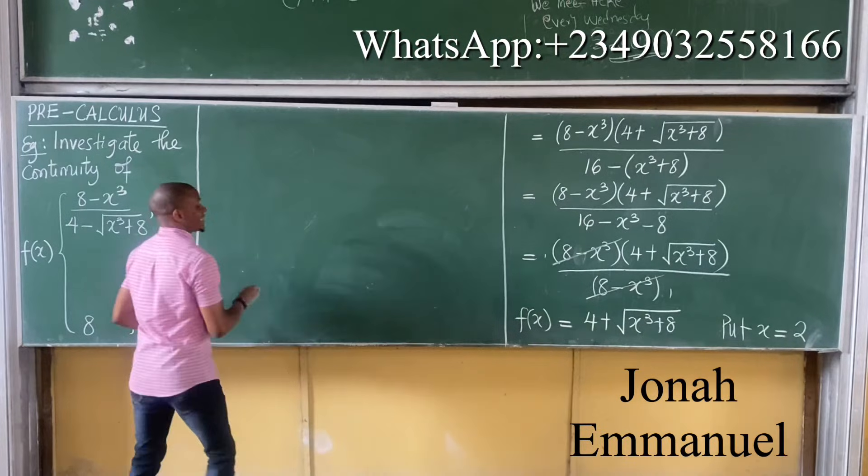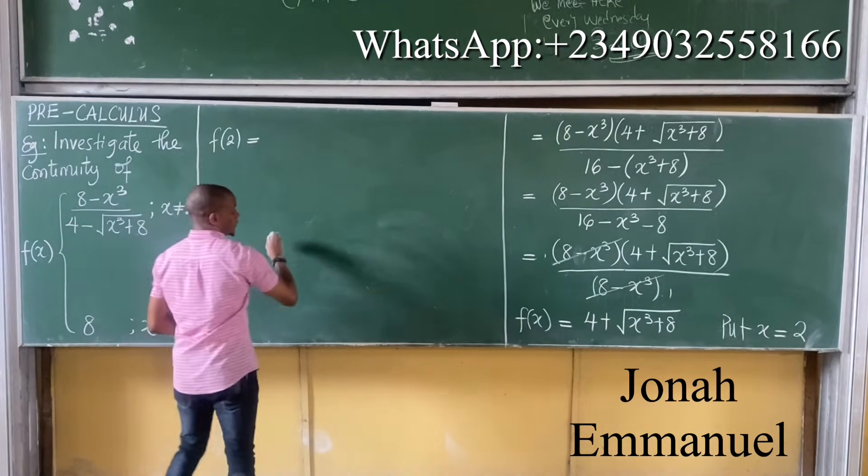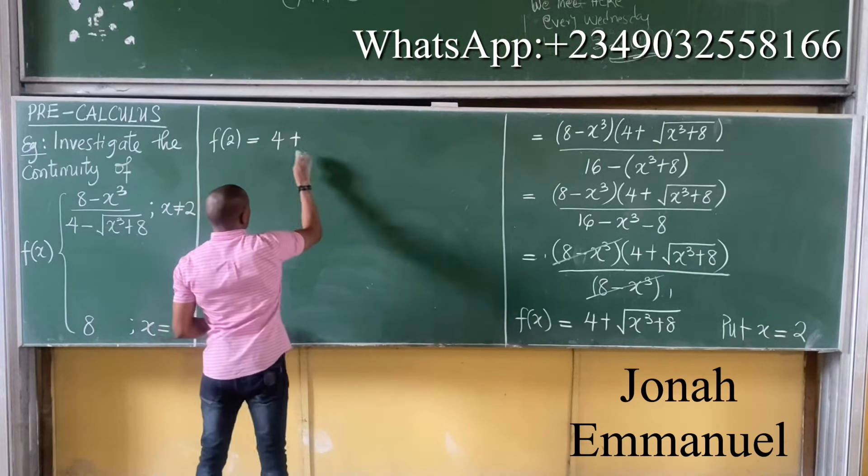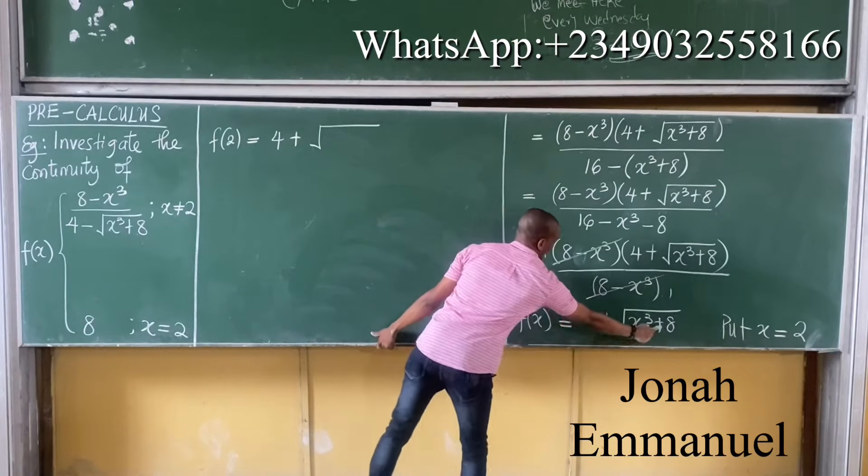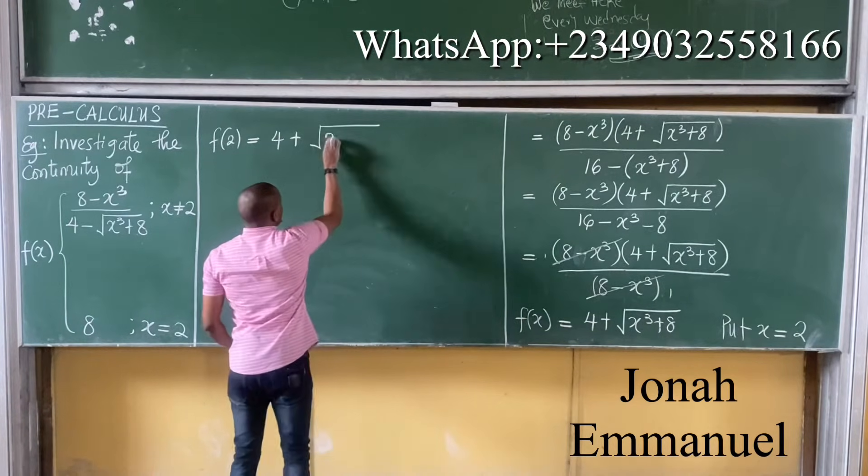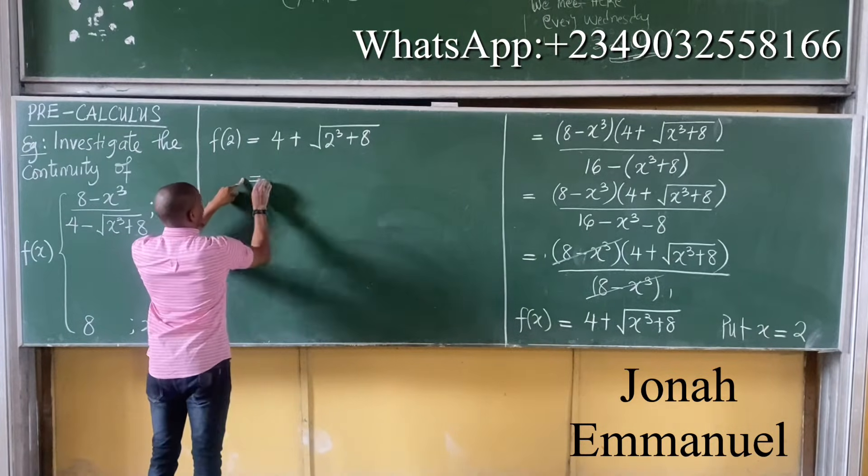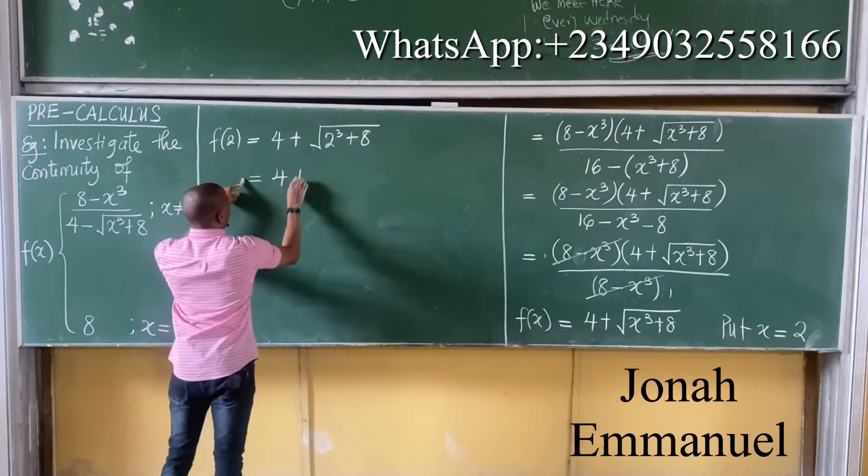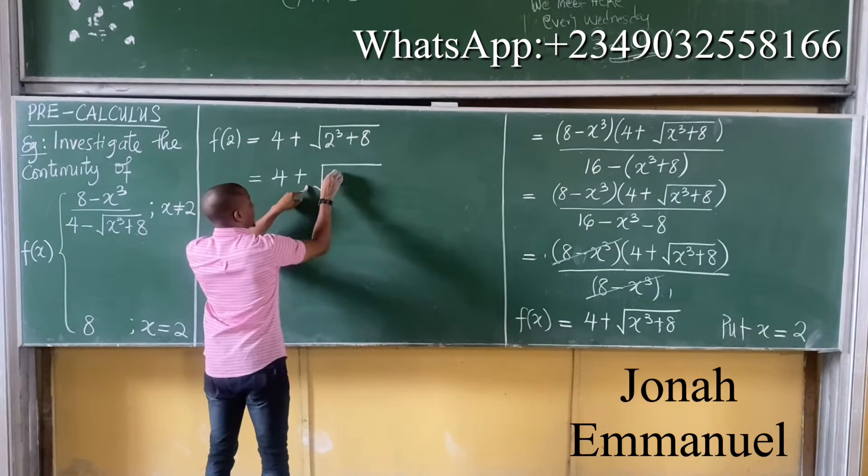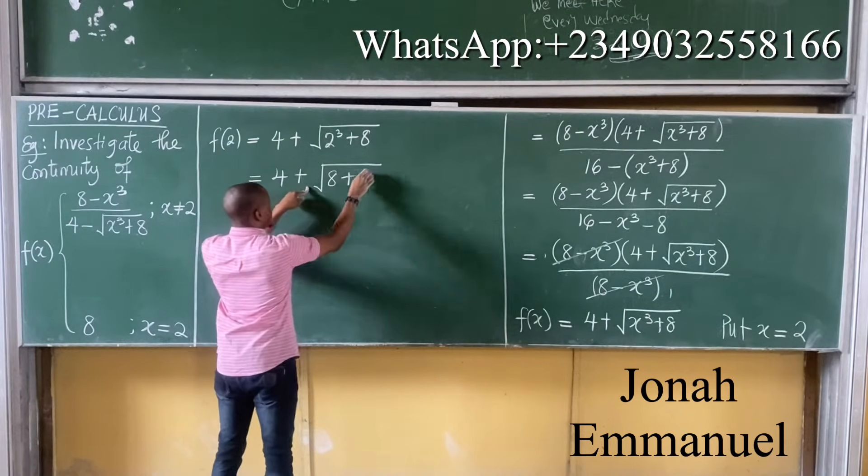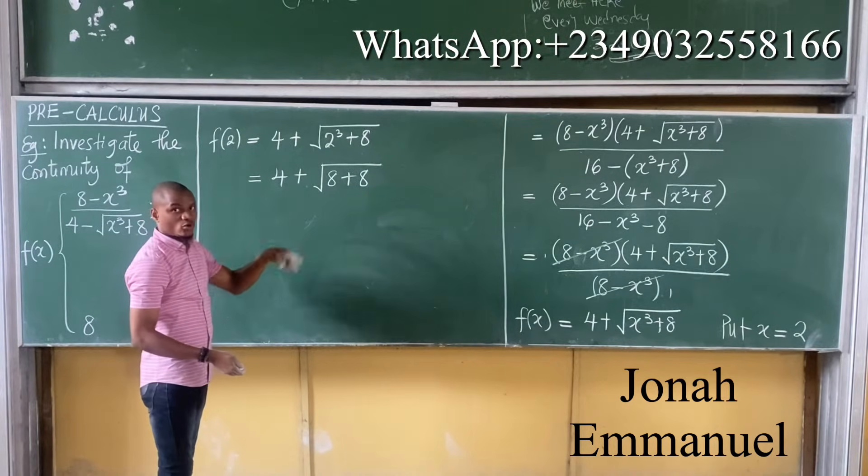If I put x as 2, we'll have that f of 2 is now equal to 4 plus the square root of, we said x is 2, so it becomes 2 cubed plus 8. That equals 4 plus the square root of 2 cubed is 8 plus 8. So 2 cubed becomes 2 times 2 which is 4 times 2 which is 8.